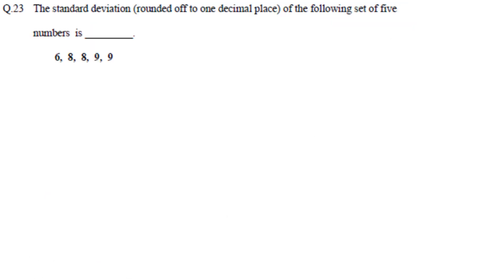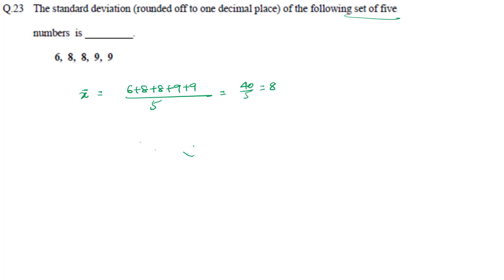Next: the standard deviation rounded off to one decimal place for the following set of five numbers. Since the number of data points is small, we treat it as a sample. First, find the mean: x̄ = (6 + 8 + 8 + 9 + 9) / 5 = 40 / 5 = 8.